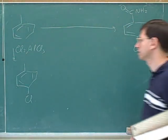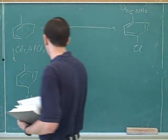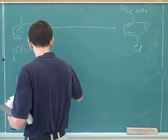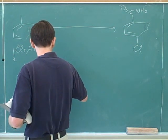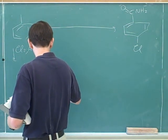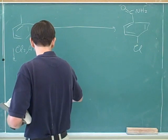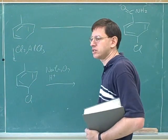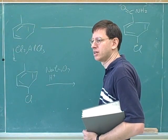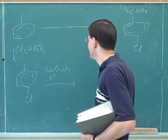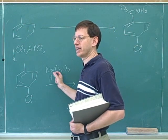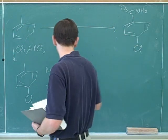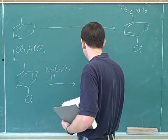You can use Na₂Cr₂O₇ with acid to get the carboxyl group. That's the reaction we were just talking about earlier — this is one of the ways of oxidizing the benzylic carbon.